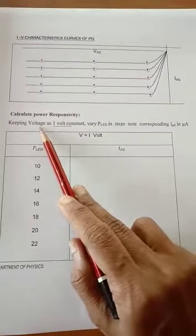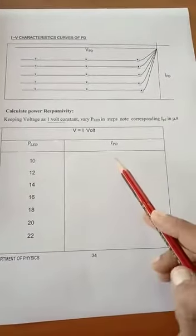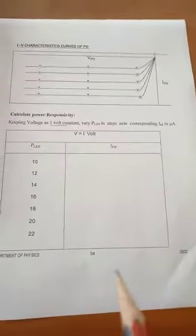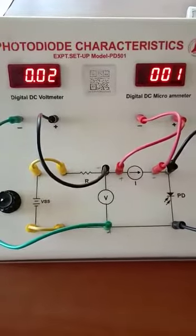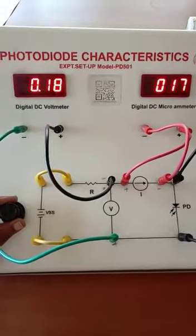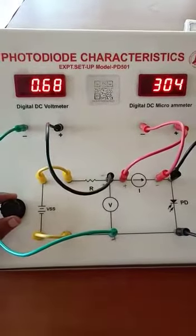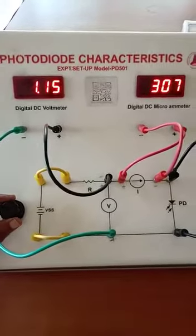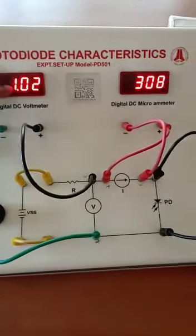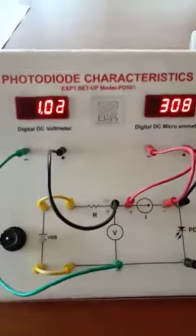To calculate the power responsivity, keep the voltage fixed at 1 volt, vary P_LED, and note down the corresponding I_PD. We will now see how to do this. Keep the voltage at 1 volt — this remains fixed.